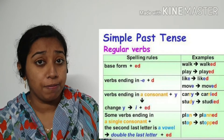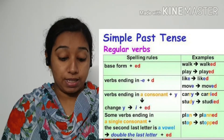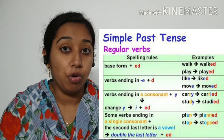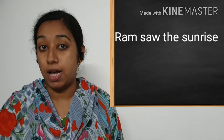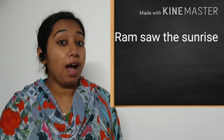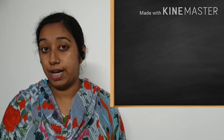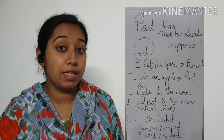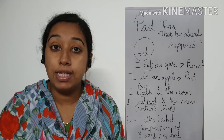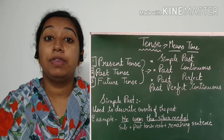A simple past tense, as I told you, is formed by adding 'd' or 'ed' to the main form of the verb. It is used to show an action that was completed in the past. Example — Ram saw the sunrise. The structure is: 'Ram' is the subject, 'saw' is the past tense verb, and 'the sunrise' is the remaining part of the sentence.